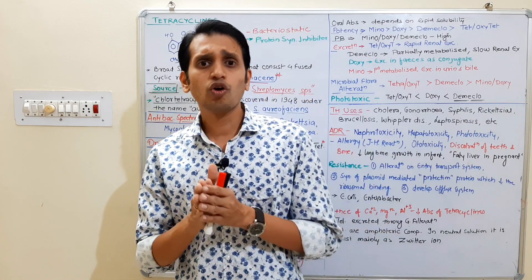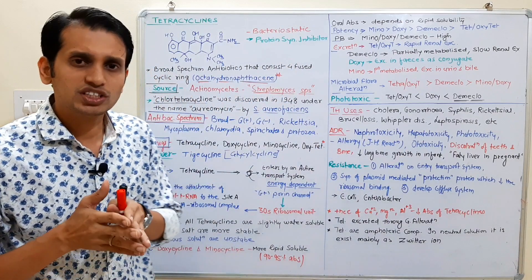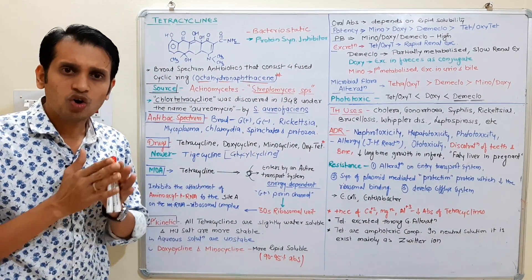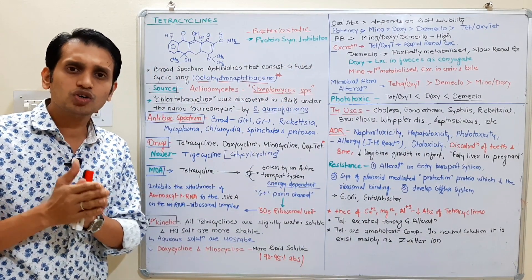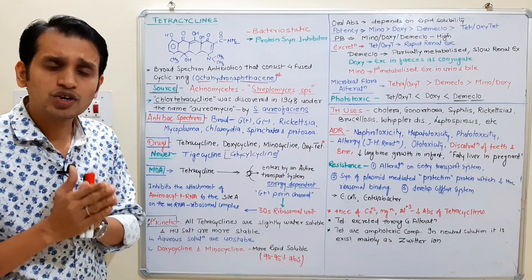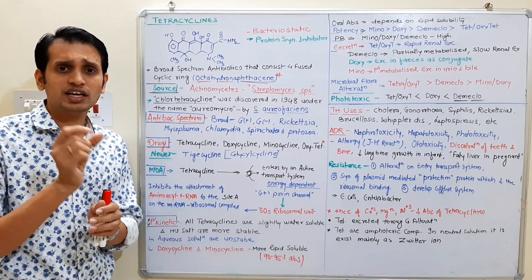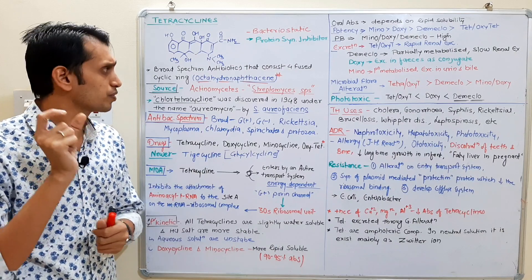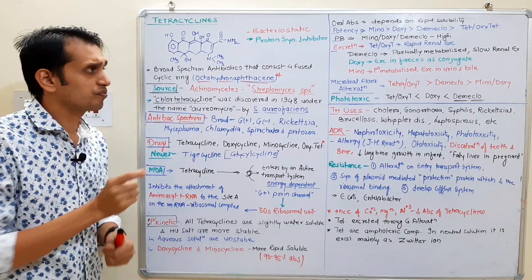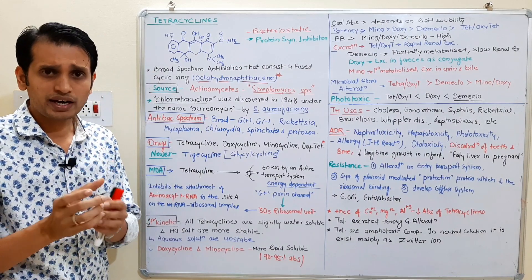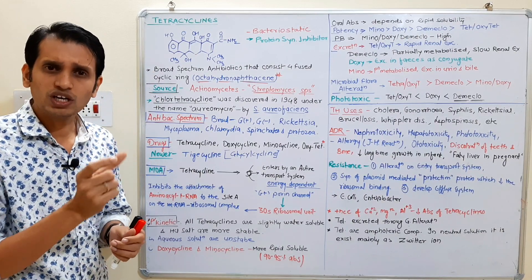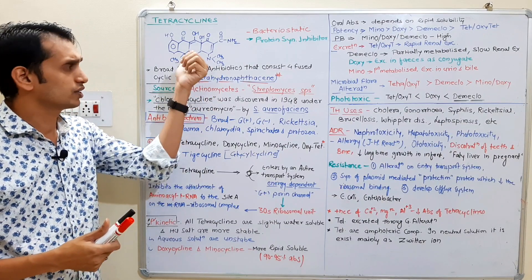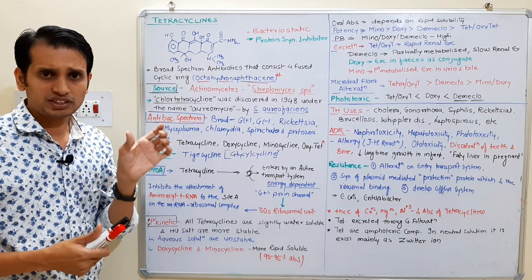Tetracyclines are broad spectrum antibiotics which consist of four fused cyclic rings known as octahydro naphthacin. Octahydro naphthacin is the essential main precursor ring of the tetracyclines. 'Tetra' means four, 'cyclic' means cyclic — so this means four fused cyclic rings, which are called the naphthacin derivatives.